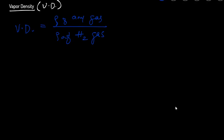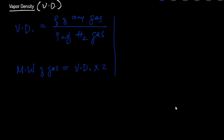Molecular mass — and this is only for gases; it doesn't work for liquids or solids — is basically vapor density of that gas times two. So: molecular mass = VD × 2. We'll see how that comes about.